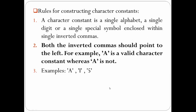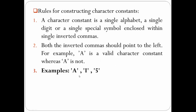The second rule is: both the inverted commas should point to the left. As we can see in this example, this is a valid character constant — both inverted commas are pointing towards the left — whereas this is an example of an invalid character constant because of the inverted commas. We have taken three examples of character constants: the first is alphabet A, the second is alphabet I, and the third is digit 5. As we have enclosed all of them inside single quotes, they become characters.